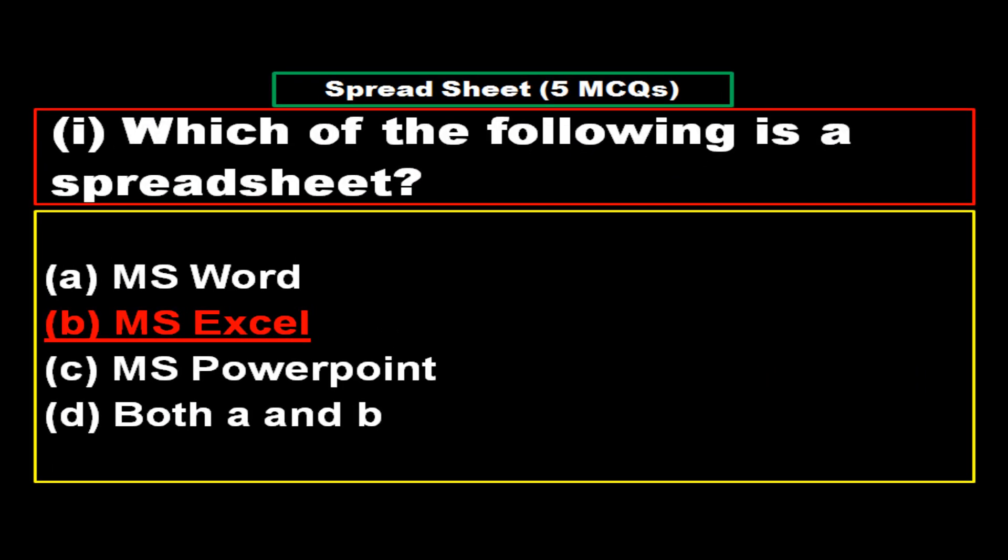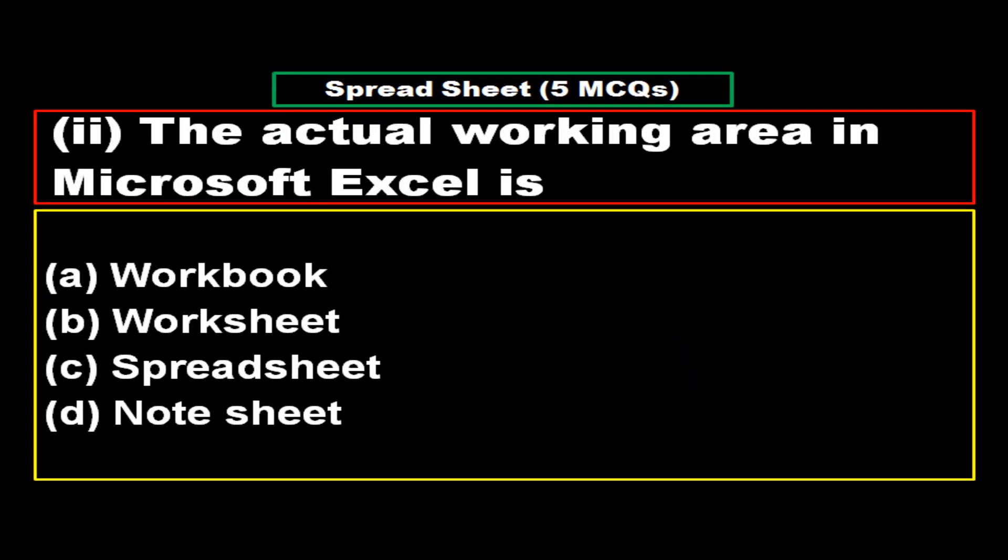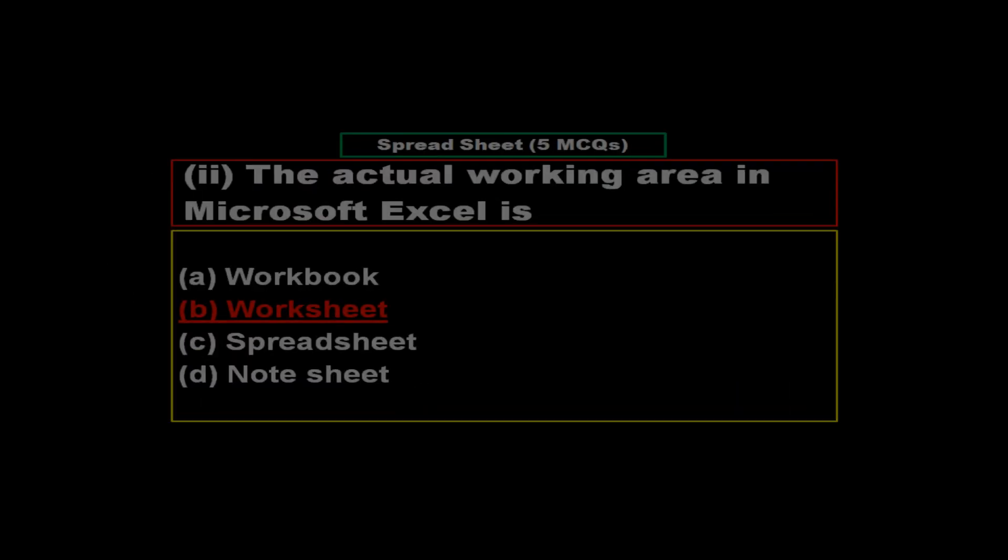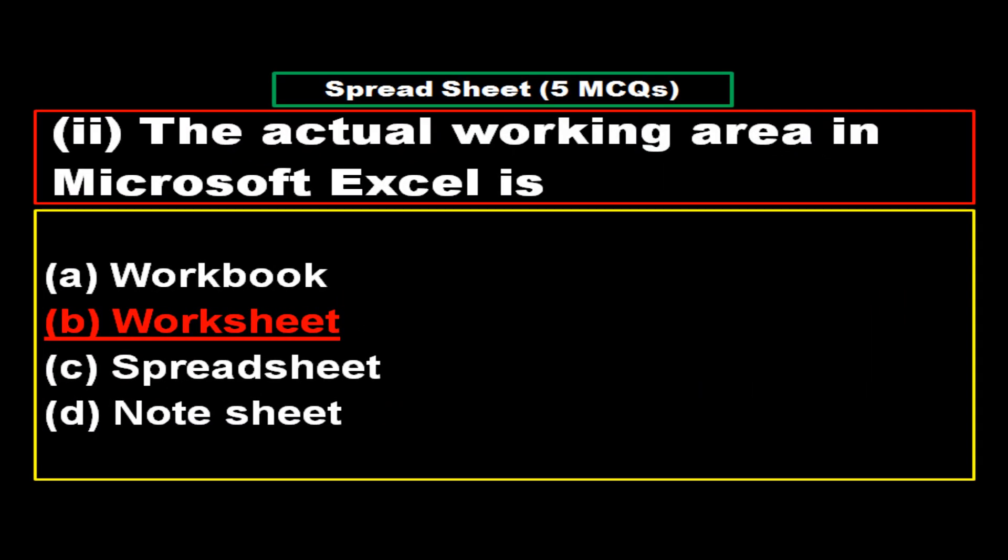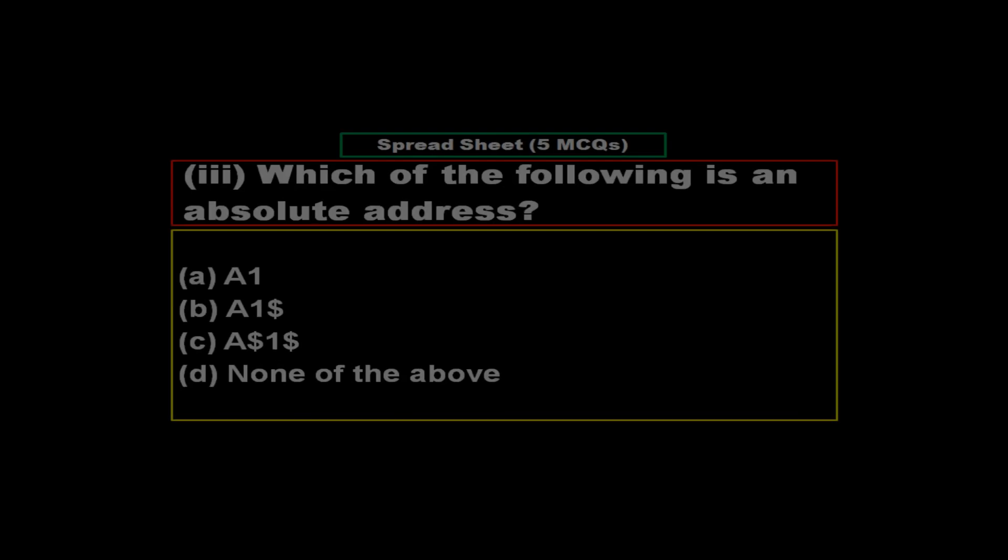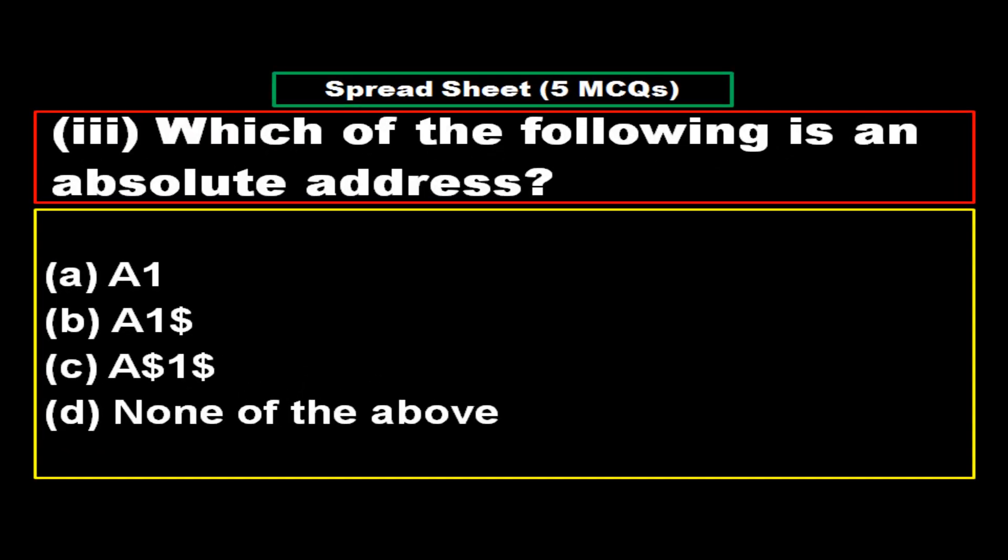The actual working area in Microsoft Excel is: Option A: Workbook, Option B: Worksheet, Option C: Spreadsheet, Option D: Note Sheet. And the right answer is Option B: Worksheet. Which of the following is an absolute address?